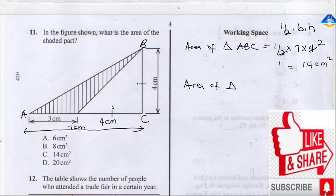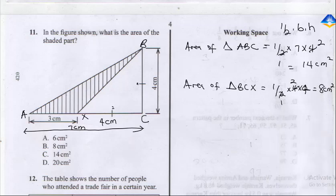For the area of triangle BCX, it's going to be half times 4 times 4. The 2 cancels, giving us 8 cm squared.